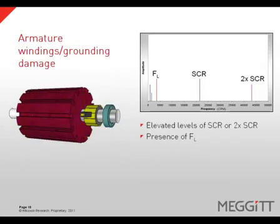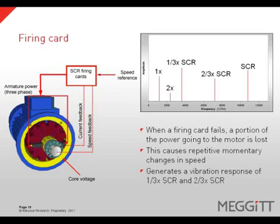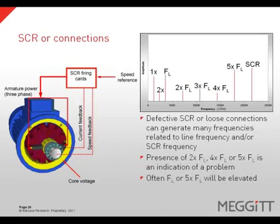Damaged or grounded armature windings will show elevated levels of SCR frequency or two-times SCR frequency, and you will likely see a peak at one-times line frequency. When an SCR firing card fails, a portion of the power going to the motor is lost, causing a momentary change in speed that generates vibration at one-third SCR frequency and two-thirds SCR frequency. A defective SCR or loose connections can generate many frequencies related to line frequency and SCR frequencies. The sheer presence of two-times, four-times, or five-times line frequency is an indication of a problem, and often one-times or five-times line frequency will be elevated.